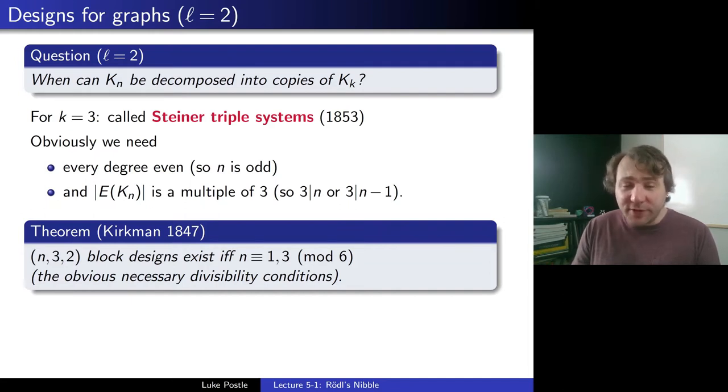So n would have to be 1, 3 or 5 mod 6 from the even degree. And then since you need n or n-1 to be divisible by 3, you are restricted to n congruent to 1 or 3 mod 6, and Kirkman actually showed that they do exist in that case. And you'll notice the date. Kirkman actually solved this problem six years before Steiner wrote his paper introducing the Steiner triple systems. Why? Because actually Steiner reintroduced the systems and didn't know about Kirkman's work.